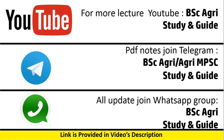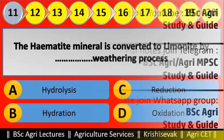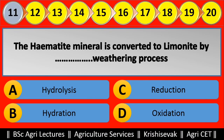Question 11: The hematite mineral is converted to limonite by blank weathering process. Options are: (a) Hydrolysis, (b) Hydration, (c) Reduction, (d) Oxidation. Right answer is Hydration, option B.